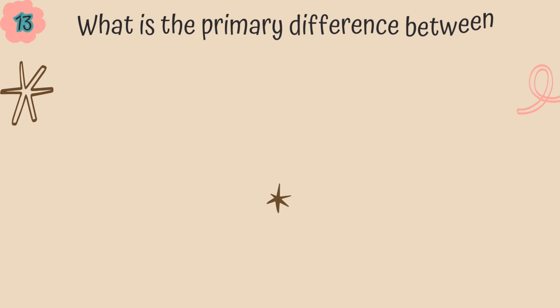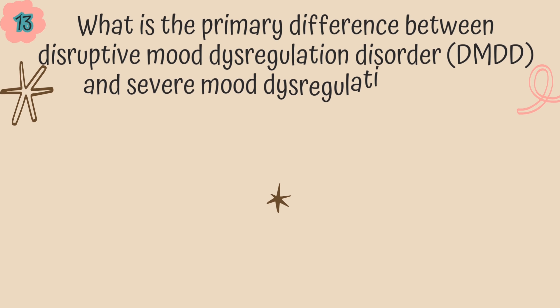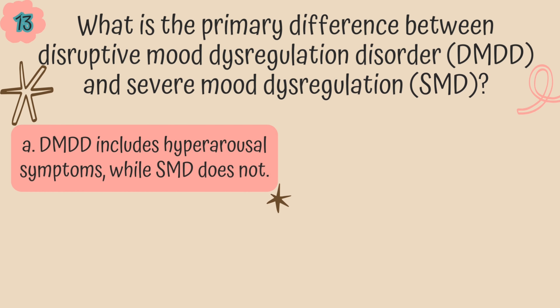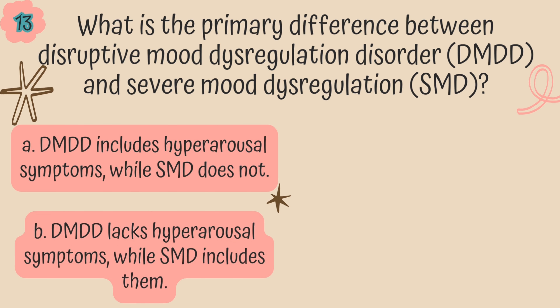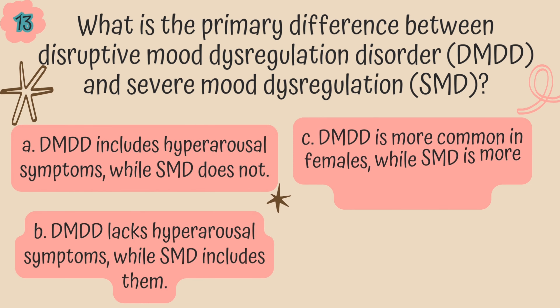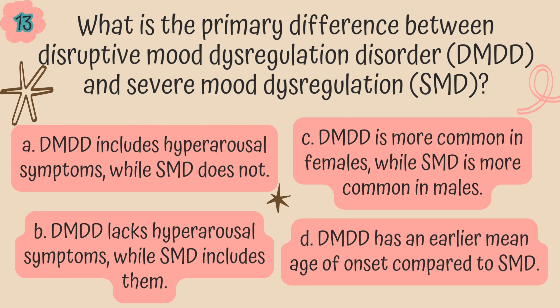Question 13. What is the primary difference between DMDD and severe mood dysregulation? A. DMDD includes hyperarousal symptoms while SMD does not. B. DMDD lacks hyperarousal symptoms while SMD includes them. C. DMDD is more common in females while SMD is more common in males. Or D. DMDD has an earlier mean age of onset compared to SMD?